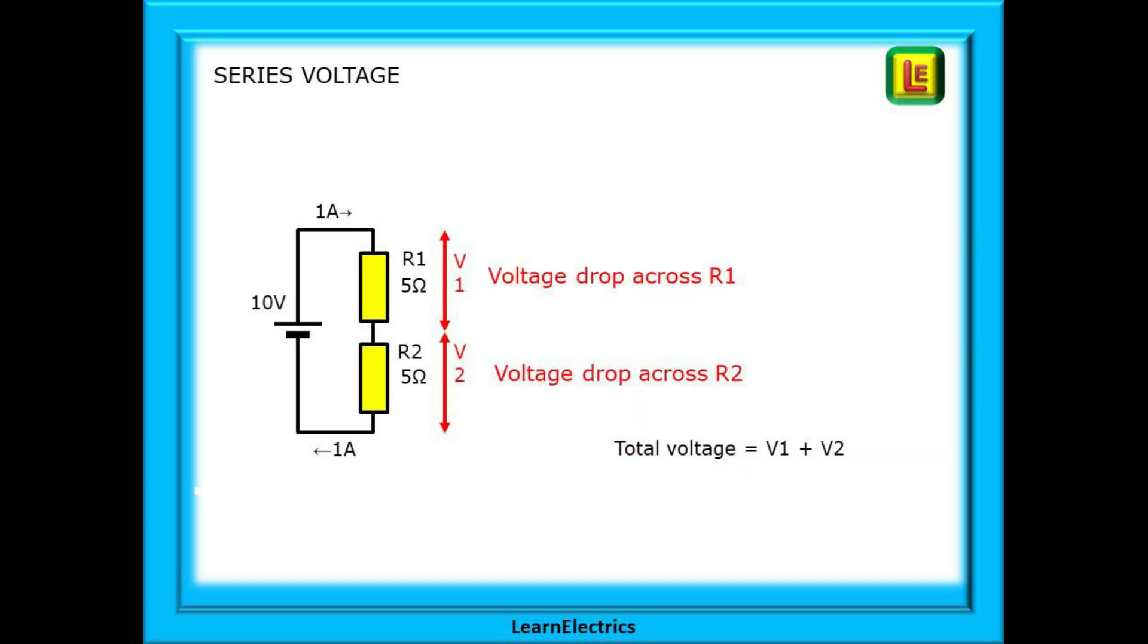We can also calculate the voltage drop—that is, how much voltage is across each component. The voltage is calculated from the current and resistance. We can see from this calculation that 5 volts is dropped across each resistor. Two resistors, 2 times 5 is 10 volts, and this is the same as the battery or voltage source.